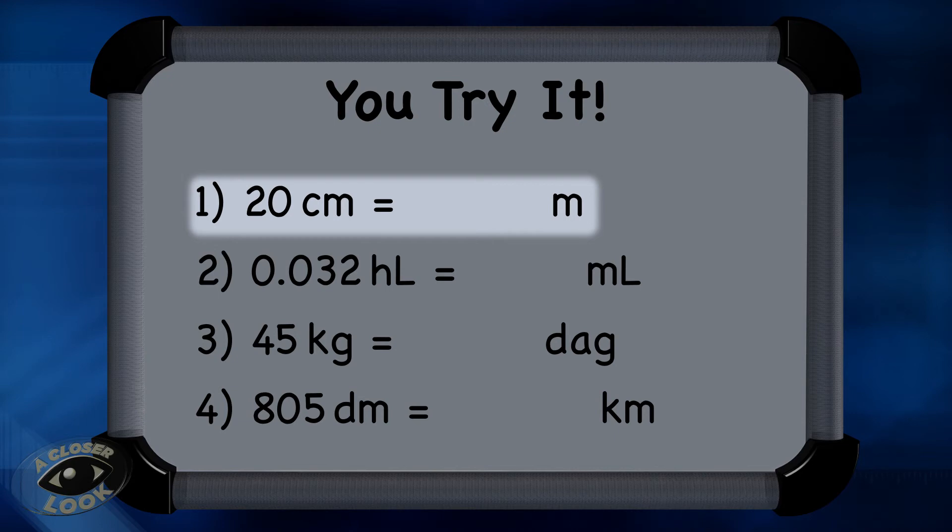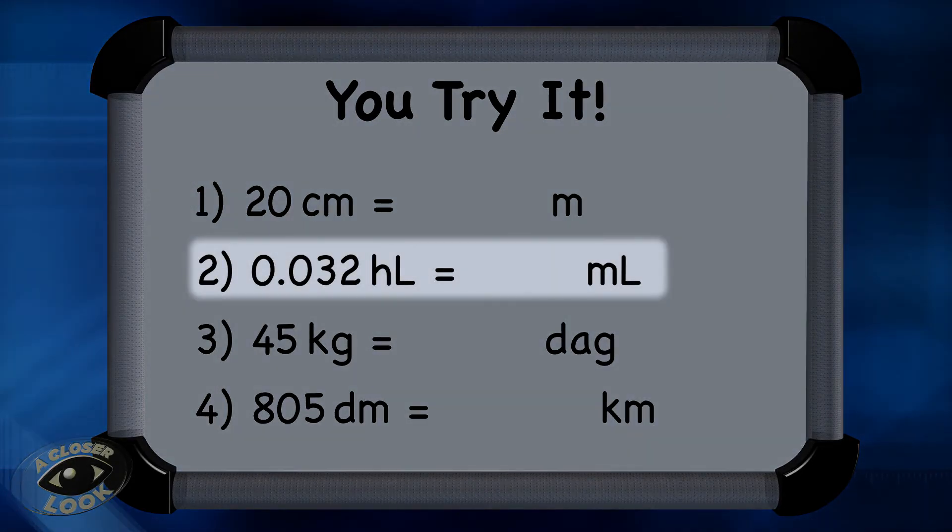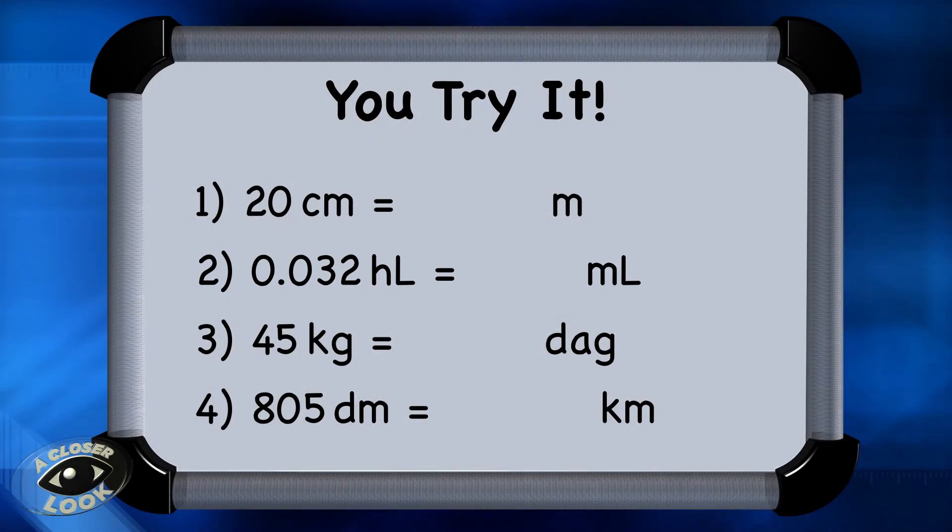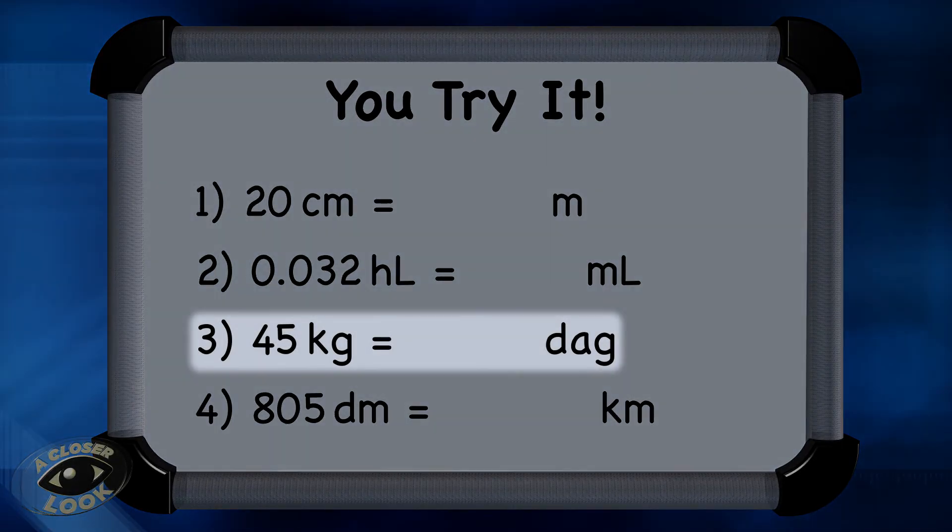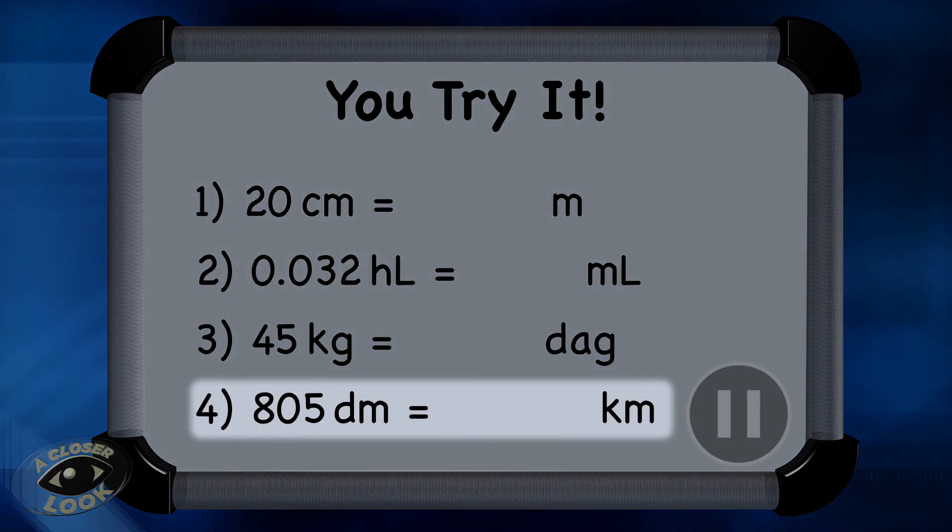Convert 20 centimeters to meters. Convert 0.032 hectoliters to milliliters. Convert 45 kilograms to decagrams. Convert 805 decimeters to kilometers.